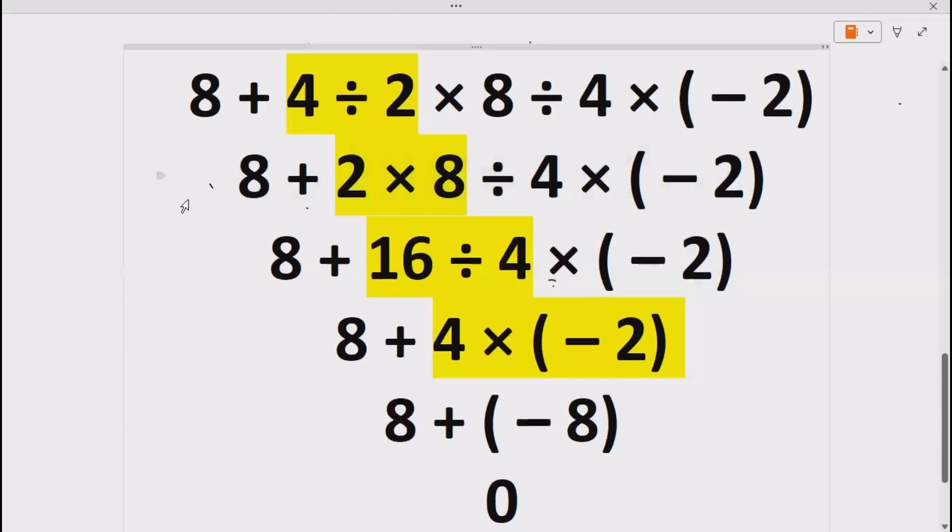Now we have 16 divided by four. We have to do this operation first because, going from left to right, we have division first. Now 16 divided by four gives us four, and multiply with minus two remains as it is.